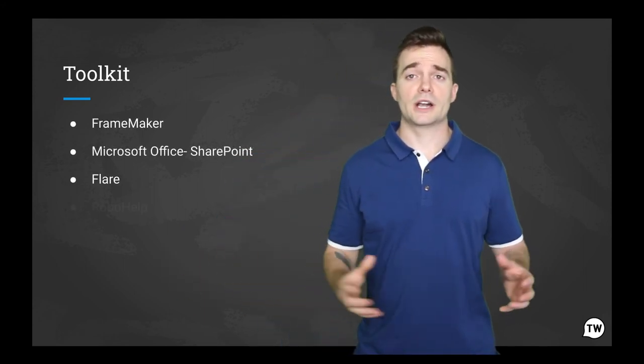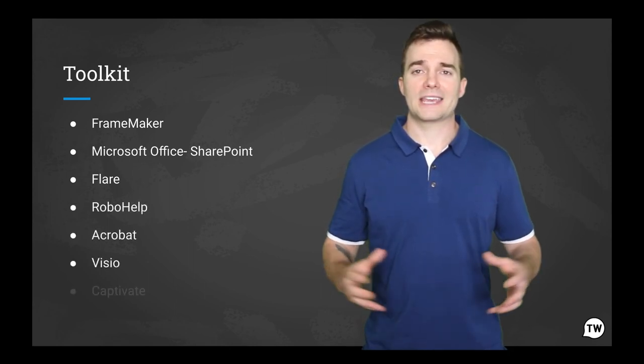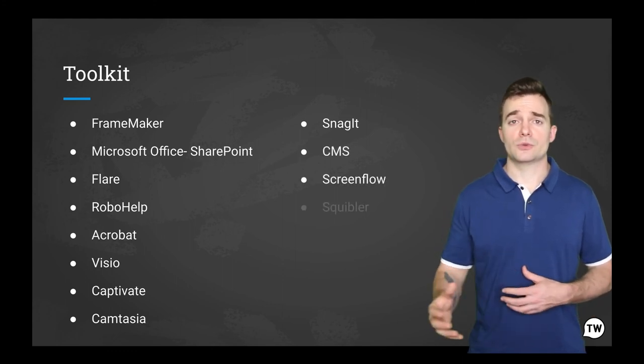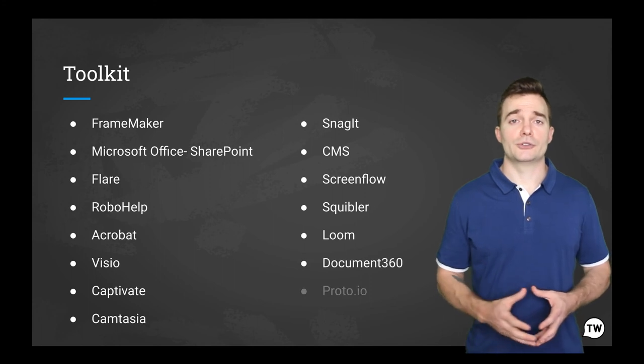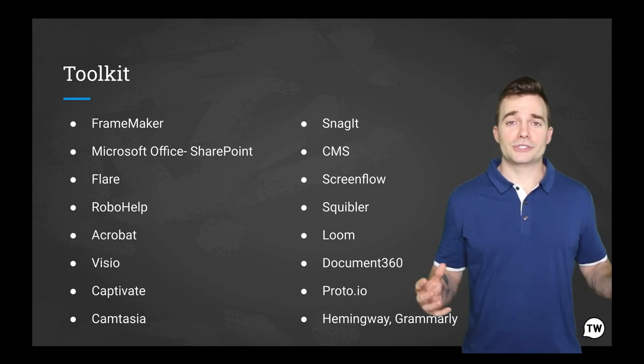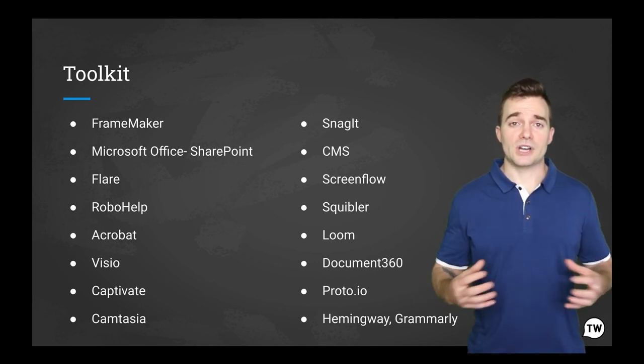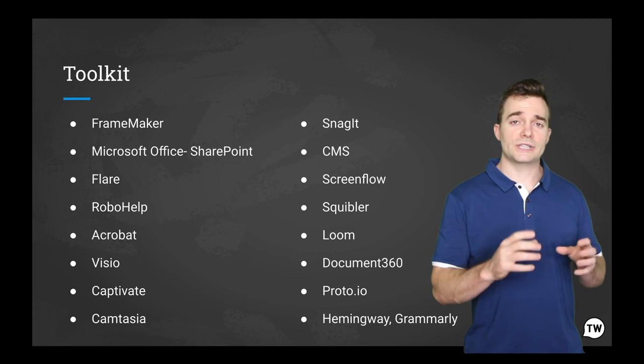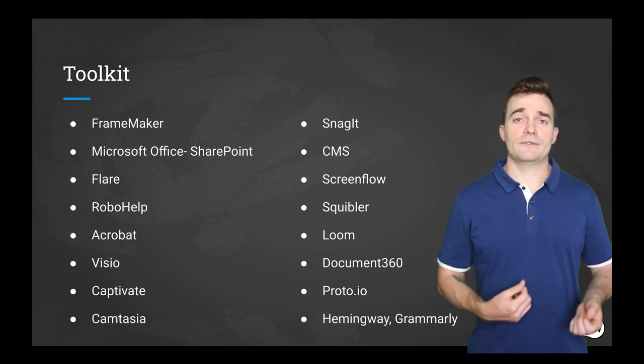Before we head off, here are some of the important tools you may see on a technical writer job description. And a lot of these have tutorials online that are free to check out. And a lot of them have free trials, so you can try them out for free. The tools that we have are FrameMaker, Microsoft Office, SharePoint, Flare, RoboHelp, Acrobat, Visio, Captivate, Camtasia, Snagit, CMS like WordPress for example, ScreenFlow, Scribbler, Loom, Document360, Proto.io, Hemingway, and Grammarly. And that's just a number of them. And there's quite a lot of tools here that you can check out. And it's important to know what tools you need for the job. Otherwise, you'll be throwing darts in the dark. And if you're a hiring manager, you want to be specific with the tools that you say that your candidates need. Even though you might get fewer people applying, you'll get better candidates, which will give you better results.